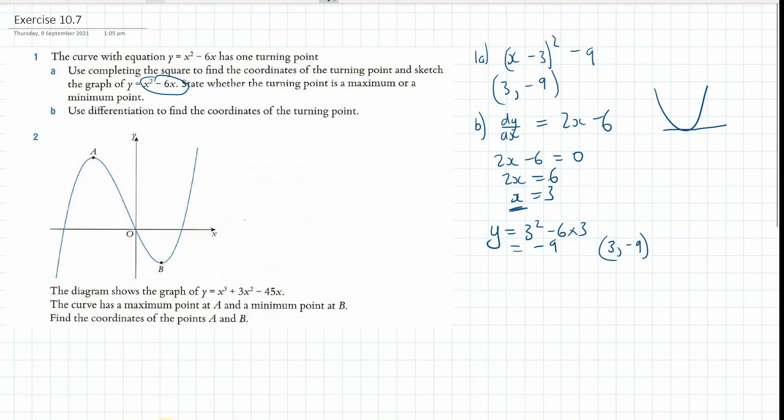Now, in this case, completing the square is obviously the quicker method, because we got it in one, essentially, two steps really. But that's not always going to be the case. So, it's good to know both methods.